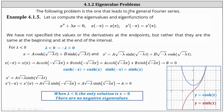The following problem is the one that leads to the general Fourier series. We have x double prime plus lambda x equals zero, where x of negative pi equals x of pi, and x prime of negative pi equals x prime of pi. We want to determine the eigenvalues and eigenfunctions. Notice here we have not specified the values or derivatives at endpoints, but rather that they are the same at the beginning and end of the interval. As usual, we need to consider lambda less than zero, lambda equals zero, and lambda greater than zero separately.